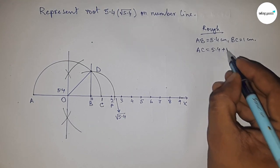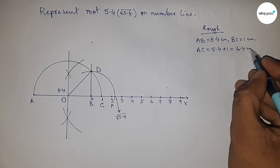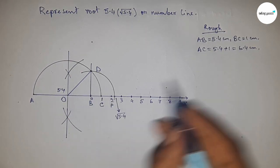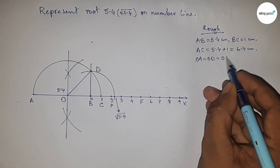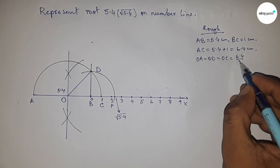Now radius OA, OC, and OD, we can write 6.4 by 2 equals 3.2 centimeters.